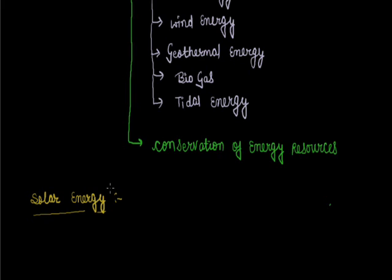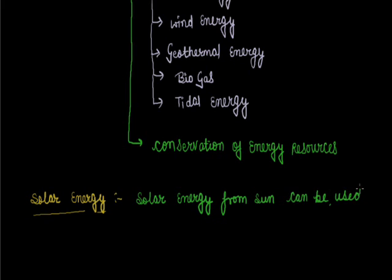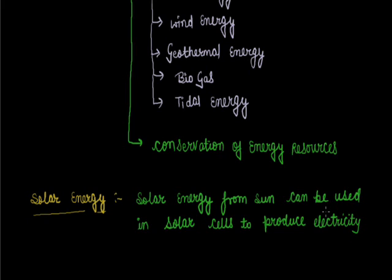The sun's heat and light energy can be felt by us every day. Solar energy trapped from the sun can be used in solar cells to produce electricity. India is a tropical country and has enormous possibilities of tapping solar energy. Many solar cells are joined into solar panels to generate power for heating and lighting purposes. It is used in solar heaters, solar cookers, solar dryers, and traffic signals.